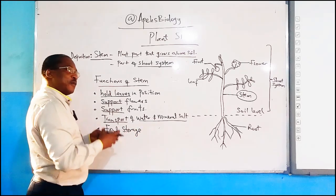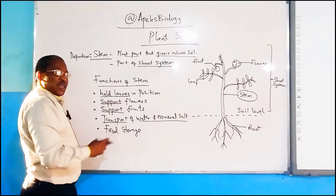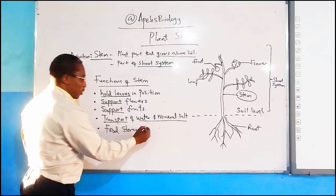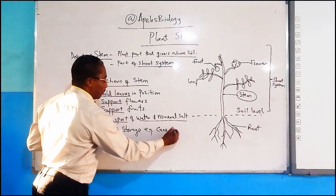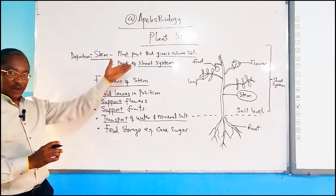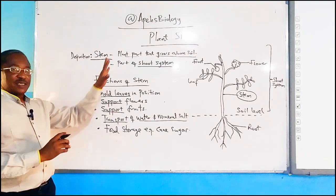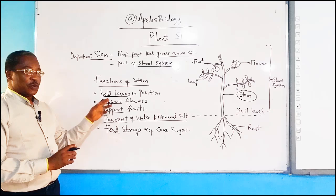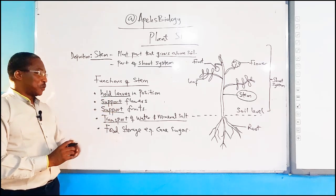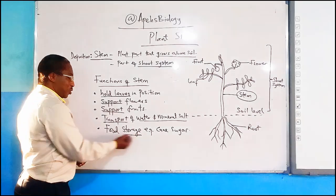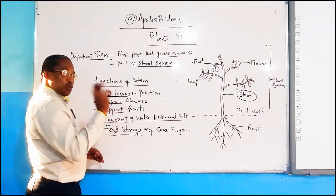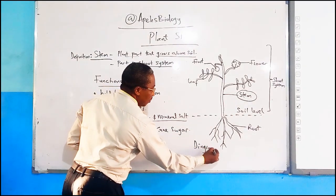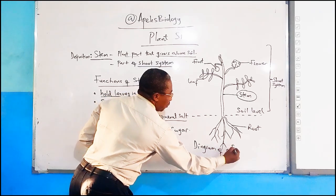You observe food storage in plants that have food stored in their stem. The very simple example that is known is the sugar cane plant — its stem contains a lot of sucrose. So that's our discussion today at Apex Biology on the plant stem. In summary, the plant stem is the part that grows above the soil; it is part of the shoot system. The functions of the stem include: holding the leaves, supporting the flowers, supporting the fruits, transporting water and mineral salts, and food storage. Any diagram we present in biology of this kind is called a diagram of a flowering plant.